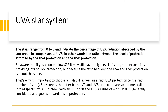The UVA star rating system is straightforward. Star ratings range from 0 to 5 and indicate the percentage of UVA radiation absorbed by the sunscreen in comparison to UVB radiation — in other words, it is the ratio between UVA protection and UVB protection. Be aware that if you choose a low SPF, it may still have a high star rating, not because it provides a lot of UVA protection, but because the ratio between UVA and UVB protection is about the same.